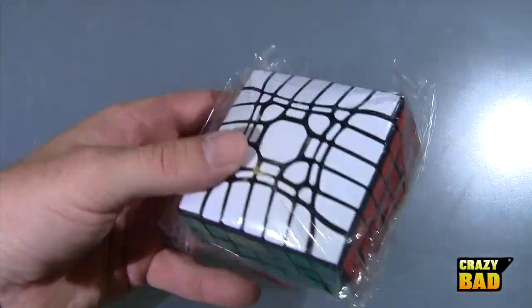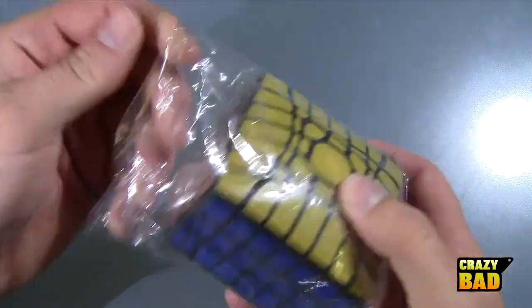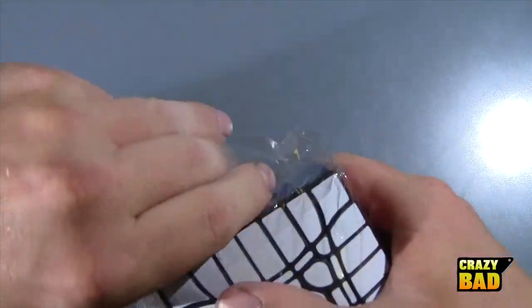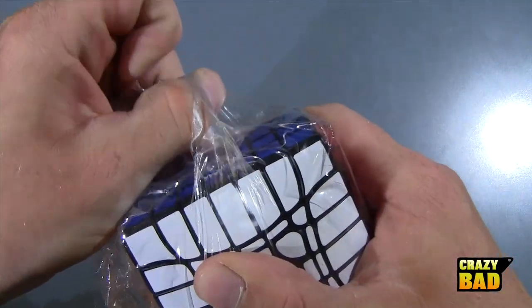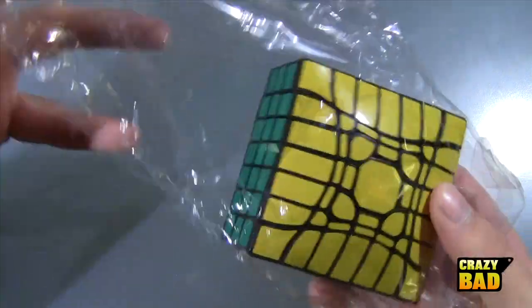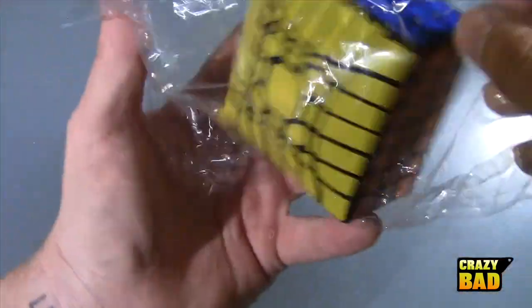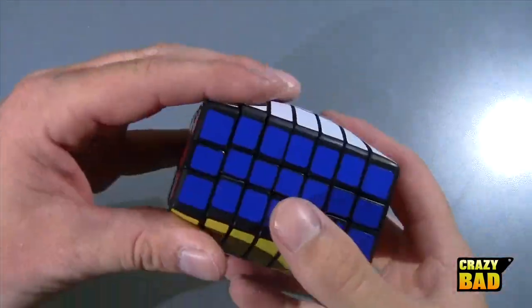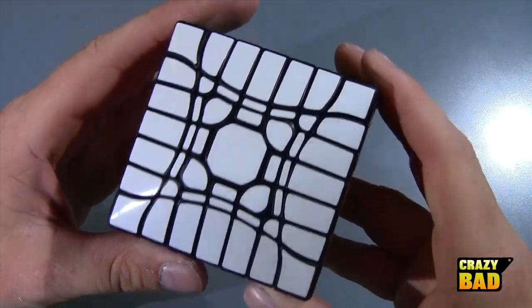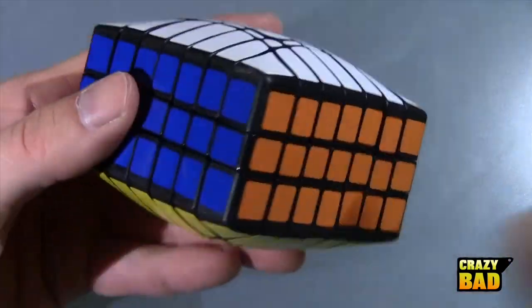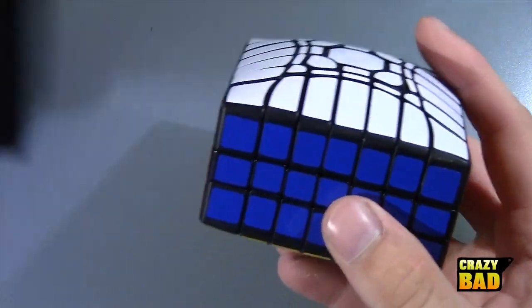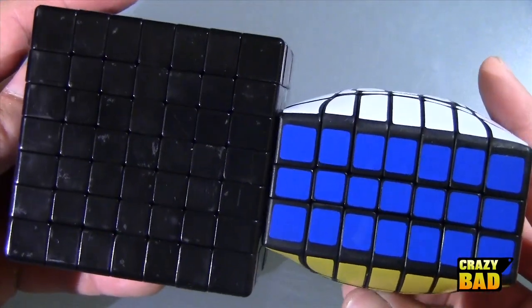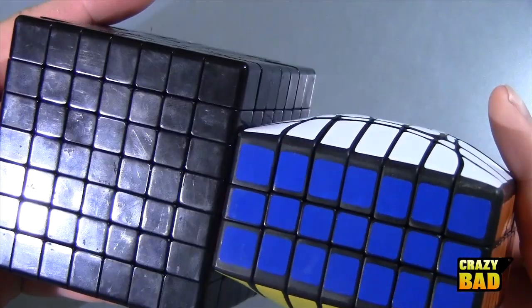Let's get to the 3x7x7 because this is the one really that I was waiting for. Like this is amazing. Wow, that is really really nice. Traiphum is the master puzzle builder and NeNe is a very good puzzle builder too.